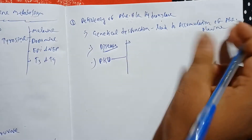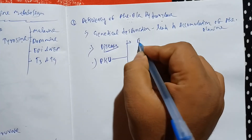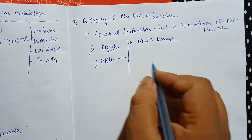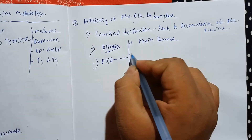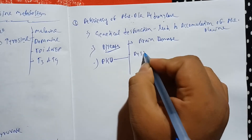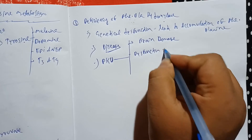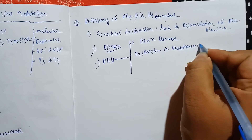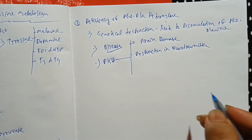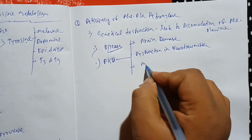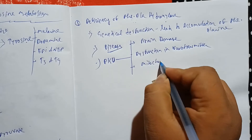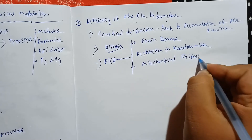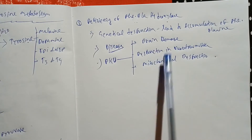The accumulation of phenylalanine causes brain damage. You can also see disruption in the nervous system and dysfunction in neurotransmitters. We can also see mitochondrial disruption in these cases.